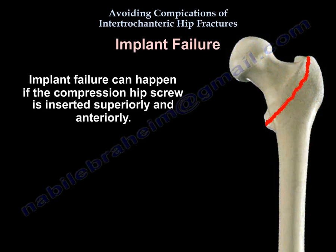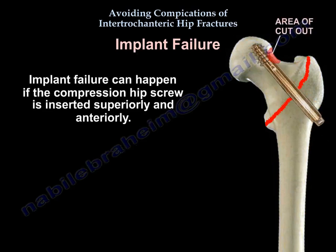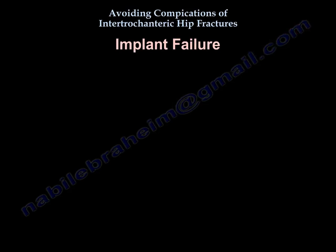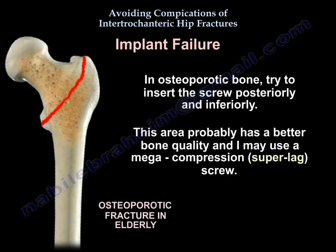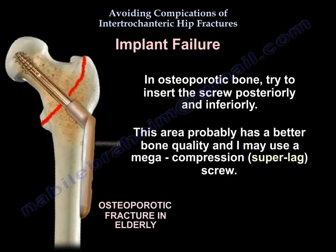Implant failure can happen if the compression hip screw is inserted superiorly and anteriorly. In an osteoporotic bone, try to insert the screw posteriorly and inferiorly, as this area probably has better bone quality. You may also use a mega-compression screw.